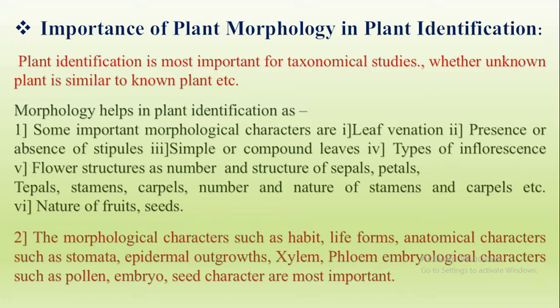Some important morphological characters for identification: number one, leaf venation — if we observe the leaf venation, it may be reticulate or it may be parallel. Then presence or absence of stipules — stipules are the small outgrowths in the axil of the leaf. If present, it is stipulate; if absent, it is exstipulate. Then simple or compound leaves — for example, mango has a simple leaf, but tamarind or rose have compound leaves. Then types of inflorescence — there may be racemose or cymose. These different characters help in identification of the plant.